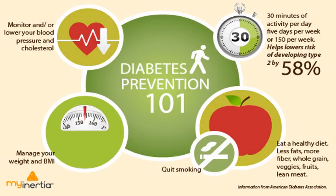Diabetic patients should follow guidelines to control their disease: monitor and lower blood pressure and cholesterol, manage body weight and BMI, follow an exercise course of about 30 minutes per day, 5 days a week — 150 minutes per week total — which lowers risk of developing type 2 diabetes by 58%. They should quit smoking and eat a healthy diet including less fat, more fiber, whole grain, vegetables, fruits and lean meat, as proposed by the American Diabetes Association.